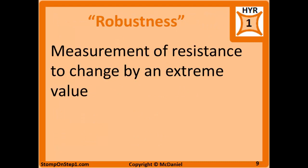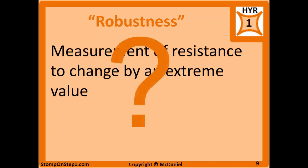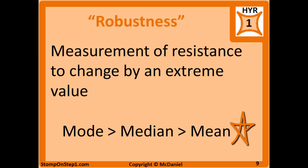The previous question illustrates robustness. Being robust is when the measurement is resistant to change by an extreme value. The mode is the most robust, median is somewhere in the middle, and mean is the least robust.